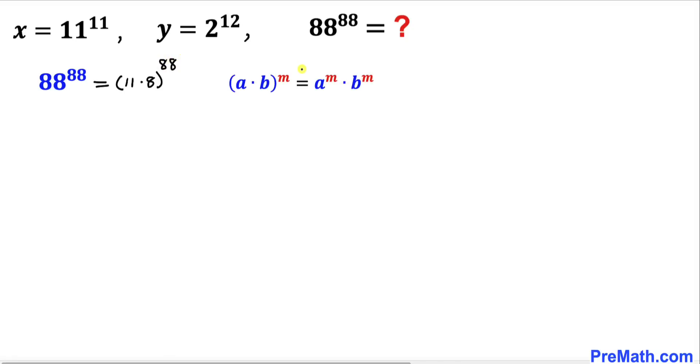Now we are going to use this basic rule. According to this rule, this could be written as 11 power 88 times 8 power 88.